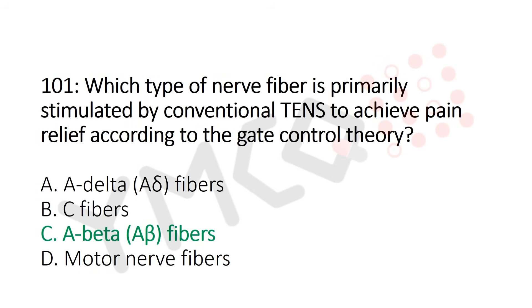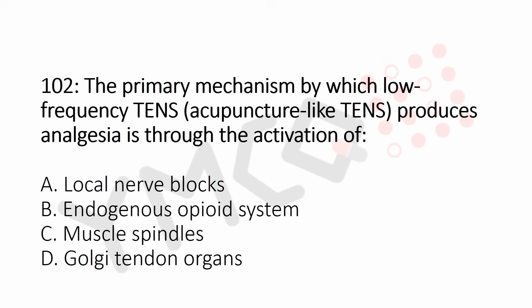Question number 102: The primary mechanism by which low frequency TENS — that's acupuncture-like TENS — produces analgesia is through the activation of: Option A: local nerve blocks. Option B: endogenous opioid system. Option C: muscle spindle. Option D: Golgi tendon organs.